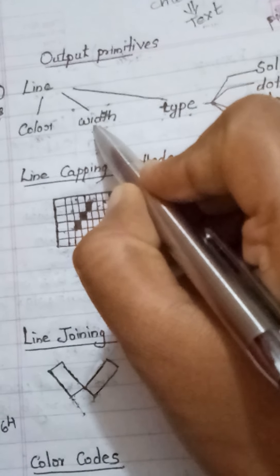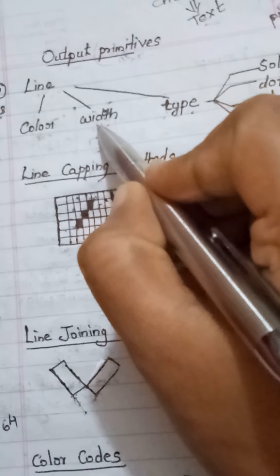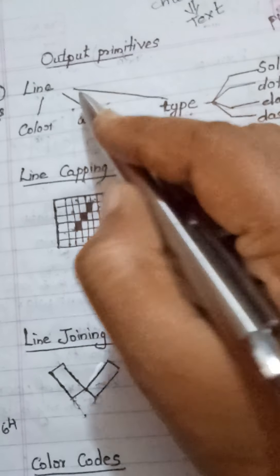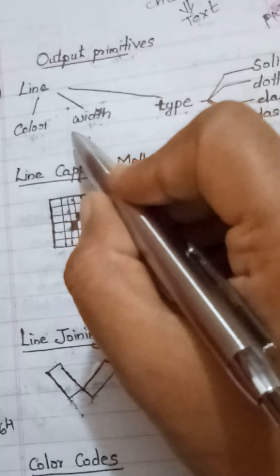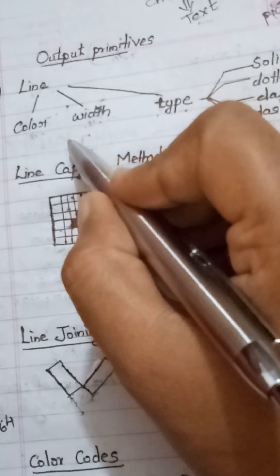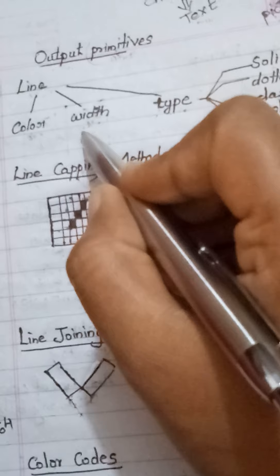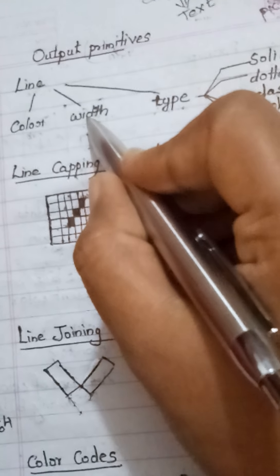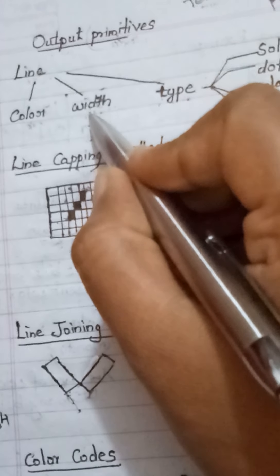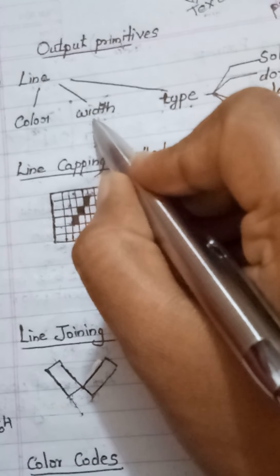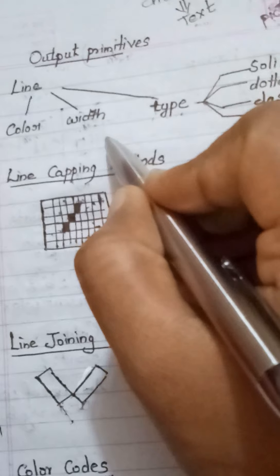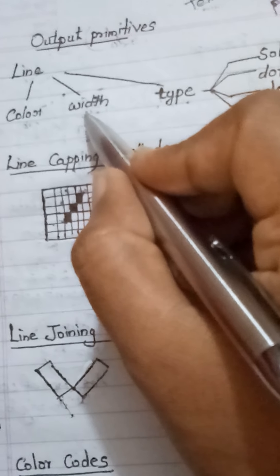The second property or attribute of line is width. Width means I can draw lines with various thickness — a thin line or a line with more thickness. I can either increase or reduce the width of the line.